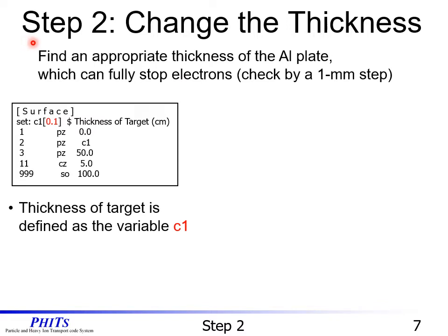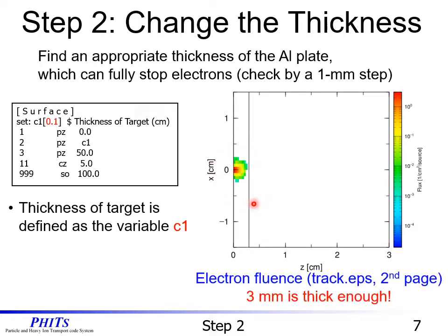Let's go on to Step 2: change the thickness. In this step, we find an appropriate thickness of the aluminum plate that can fully stop electrons, checking in 1 millimeter steps. From this input file, the thickness is defined by the variable C1, so please change this value. This figure shows a calculated result of electron fluence at C1 equals 0.3 in track.eps on the second page. We can confirm that 3 millimeters is thick enough.